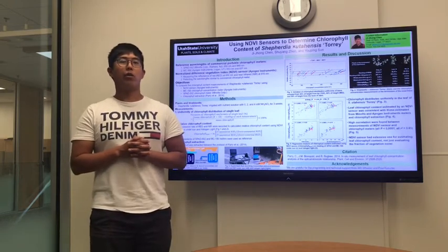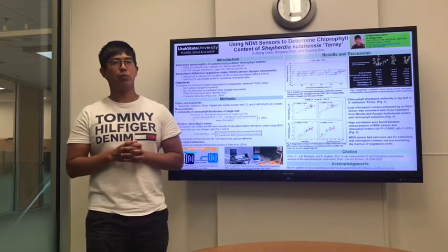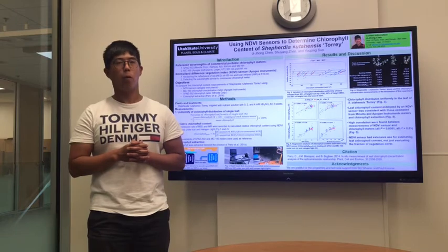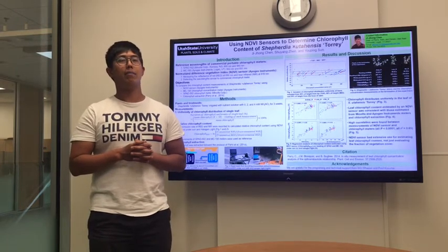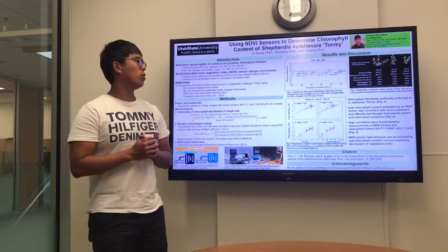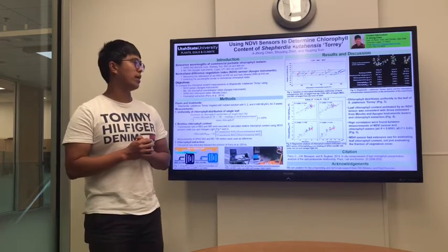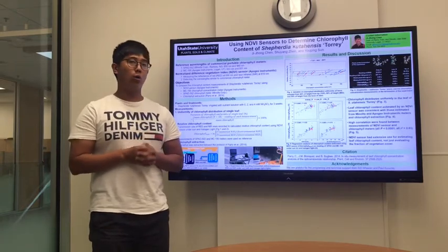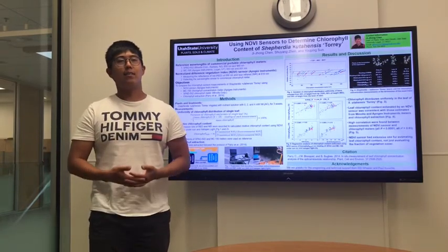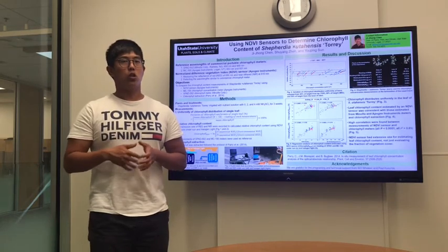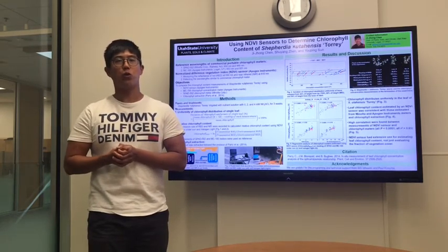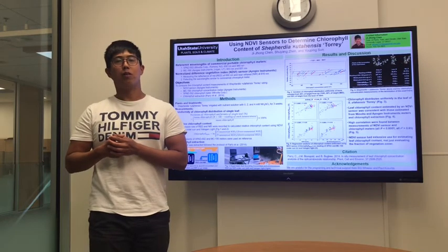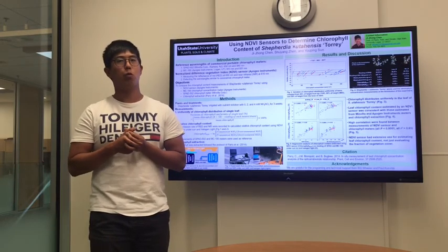Moreover, from the regression analysis of the measurements from the NDVI sensor and the commercial portable chlorophyll meters — which are SPAD and MC100 — they show a strong positive correlation between their measurements, as shown in Figure 5. Therefore, from our results, we know that the NDVI sensor has extensive use to estimate the chlorophyll content of plants, and it can serve as an alternative way to study chlorophyll level for those who do not have portable chlorophyll meters.